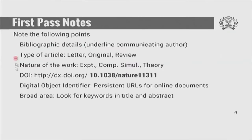Just by reading the title, abstract, introduction minimally, browsing through section headings, skipping the rest, and directly reading the conclusion, you can get an overall idea. What was suggested is that we make a first pass note. The notes in the first pass essentially contain bibliographic details, type of article, nature, DOI number, and so on. We used this and gave you an assignment where you had to pick up papers from different disciplines and take down a first pass note.